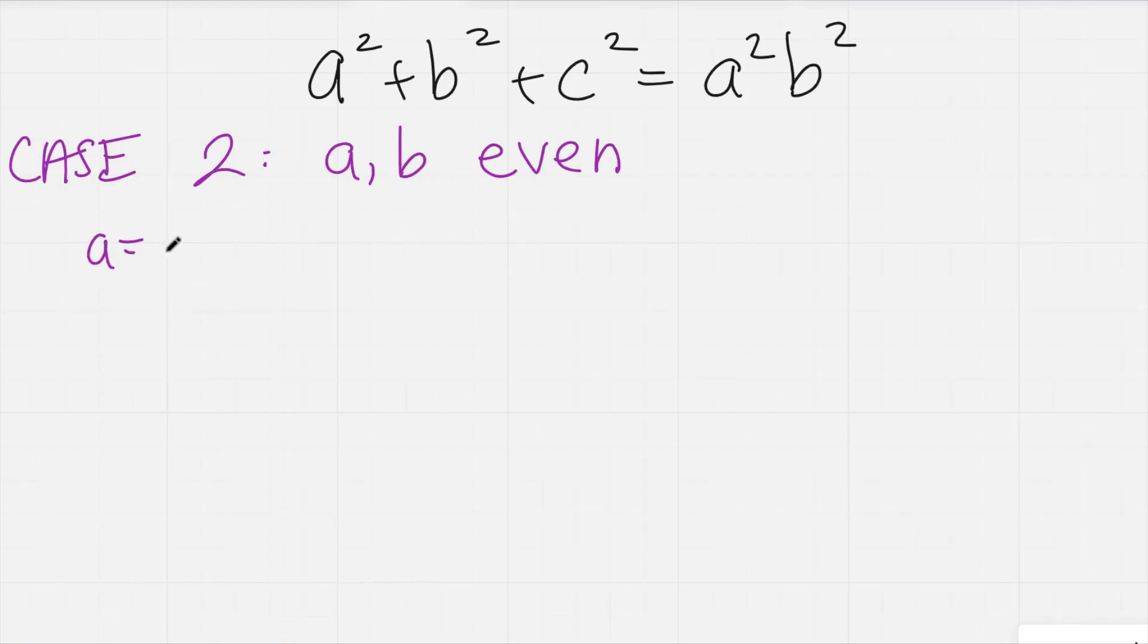Okay, so let's look at when a and b are both even. Well, then that means I can write a as say 2m, b as 2n. And also looking at this, we're going to have even number plus even number equals even number, so we need c² to be even, and therefore c also even. So I can call this say 2p.